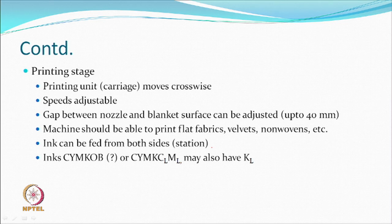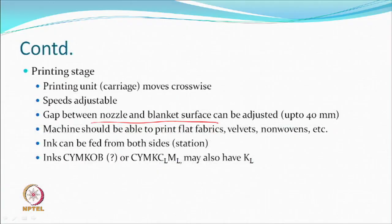The gap between the nozzle plate and the blanket/fabric surface can be adjusted up to 40 millimeters, allowing thicker fabrics to be accommodated. For thinner fabrics, the gap is reduced to avoid ink spread. If the gap is too large, ink fired — especially by continuous inkjet — may travel at an angle and land in the wrong place. This is a non-contact printing process.